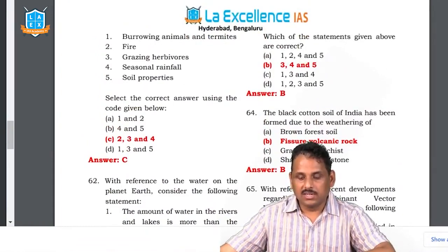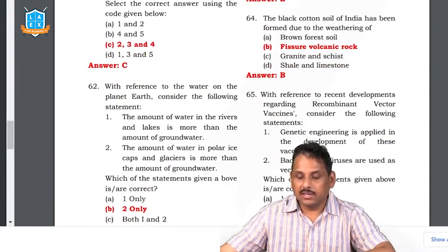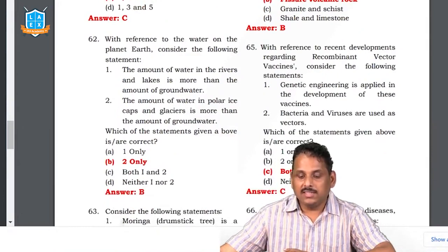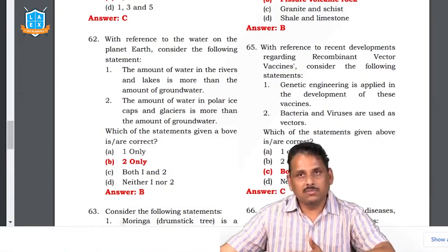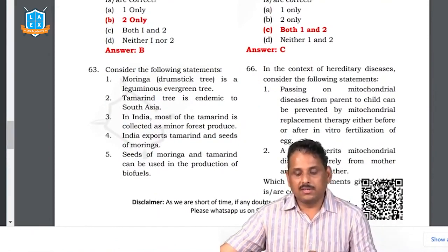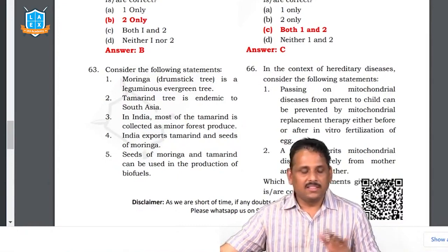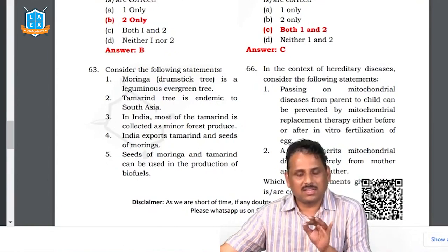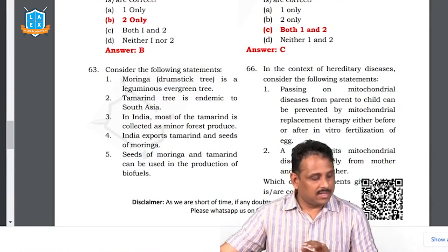Question 64: black cotton soil comes from volcanic rock. Question 65: with reference to recombinant vector vaccines — due to COVID-19 these are very much in use. Genetic engineering is applied in the development of these vaccines — yes, recombination technology is genetic engineering. Bacteria and viruses are used as vectors — true; you change the plasmid in the bacteria. These are recombinant technologies. Question 66: in the context of hereditary diseases — passing on mitochondrial diseases from parent to child can be prevented by mitochondrial replacement therapy either before or after in vitro fertilization of an egg.